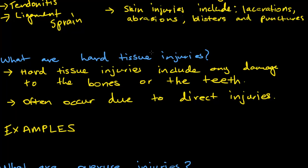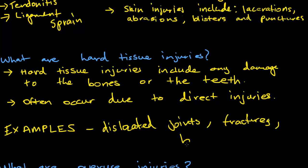What are hard tissue injuries? Hard tissue injuries include any damage to the bones or the teeth — that's pretty much all you need to know. They often occur due to direct injuries. For example, getting a football straight into your face at great force and losing teeth, or landing incorrectly and breaking bones in your hand — those would be hard tissue injuries. Examples include dislocated joints, fractures, and broken bones. Even cracked or dislodged teeth count.